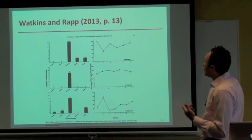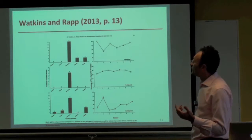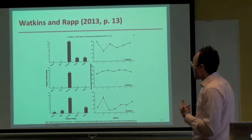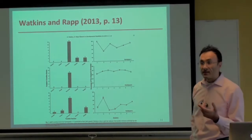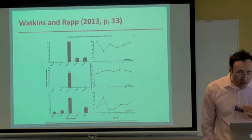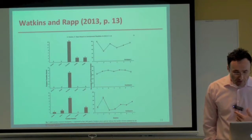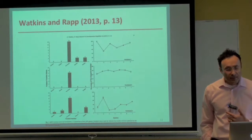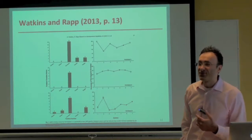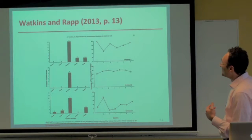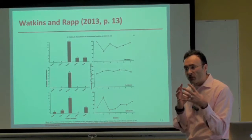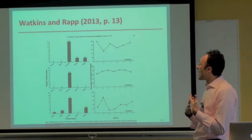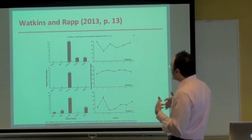I did a study with John Rapp, published in Research in Developmental Disabilities in the first issue of 2013, titled 'The Convergent Validity of the Questions About Behavioral Function Scale and Functional Analysis for Problem Behavior Displayed by Individuals with Autism Spectrum Disorder.' We had six participants and compared QABF scores with functional analysis data to see how well they aligned.